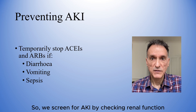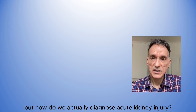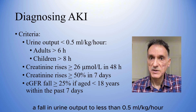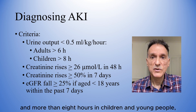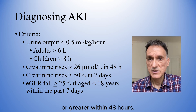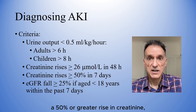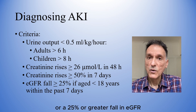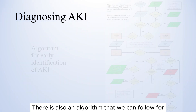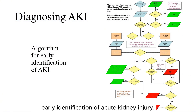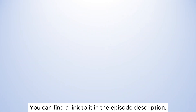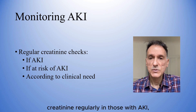We screen for AKI by checking renal function on a blood test. To actually diagnose acute kidney injury, we will use any of the following criteria: a fall in urine output to less than 0.5 millilitres per kilogram per hour for more than 6 hours in adults and more than 8 hours in children and young people; a rise in creatinine of 26 micromoles per litre or greater within 48 hours; a 50% or greater rise in creatinine known or presumed to be within the past 7 days; or a 25% or greater fall in EGFR in those aged under 18 years within the past 7 days. There is also an algorithm for early identification of AKI — you can find the link in the episode description. We will monitor creatinine regularly in those with AKI or at risk of it, with frequency varying according to clinical need.